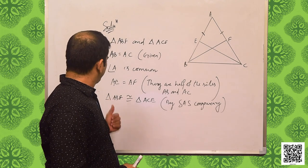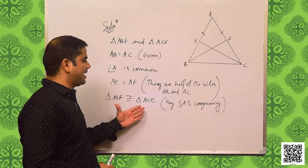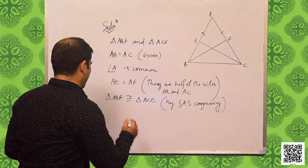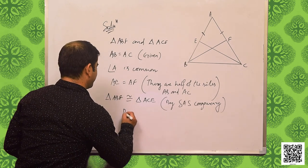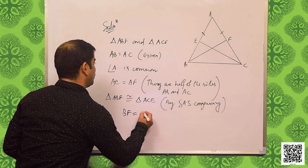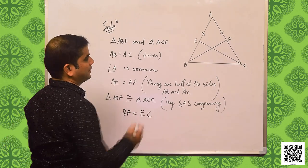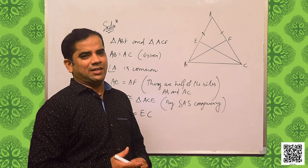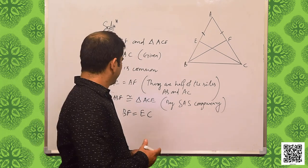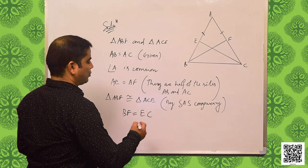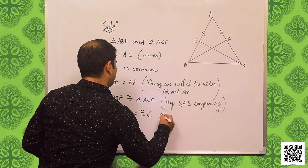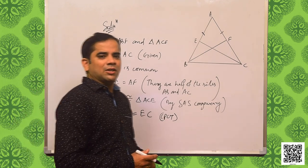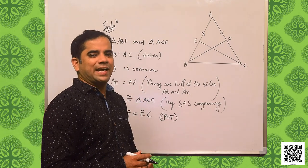As we have proved that triangle ABF and triangle ACE are congruent to each other, now we can write that BF is equal to EC by CPCT. We have proved that BF is equal to EC. This concludes example 5.